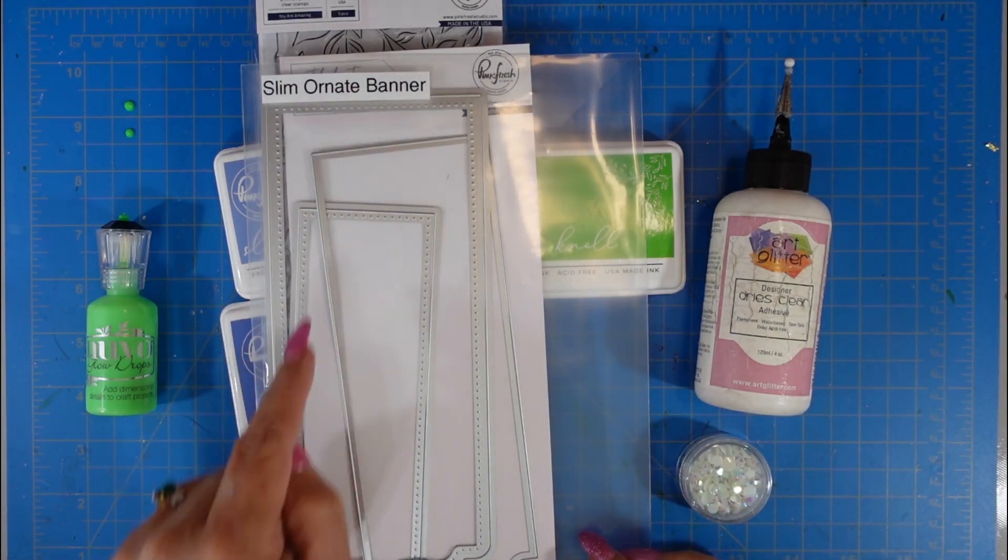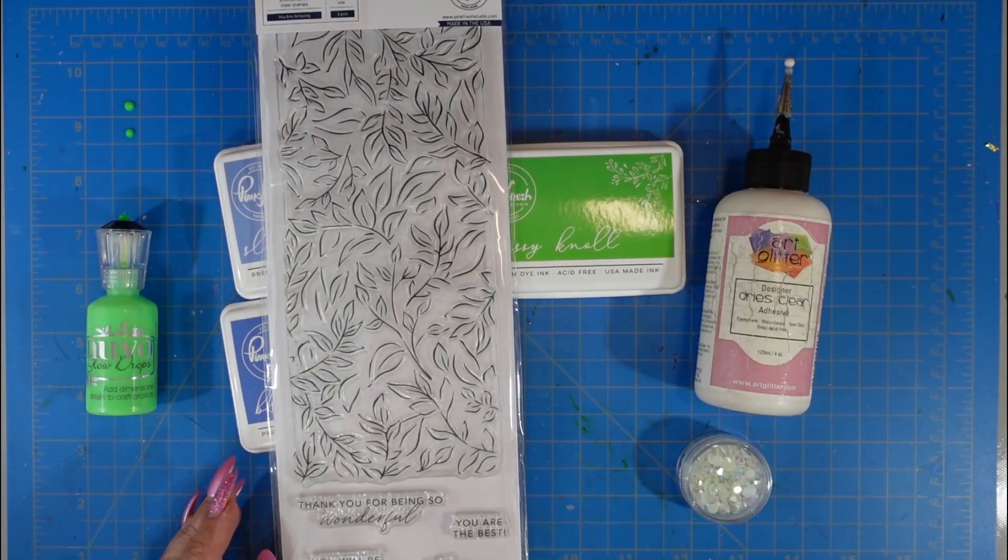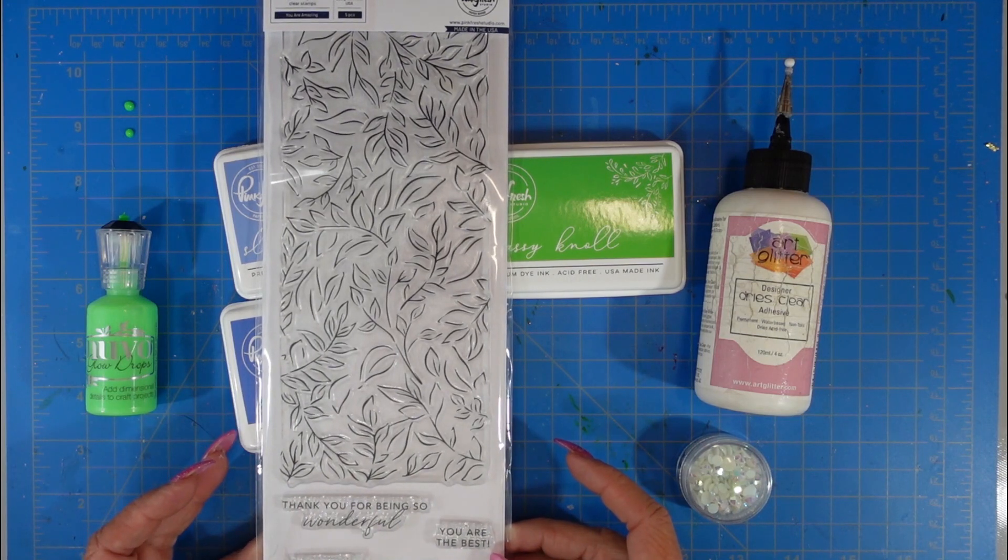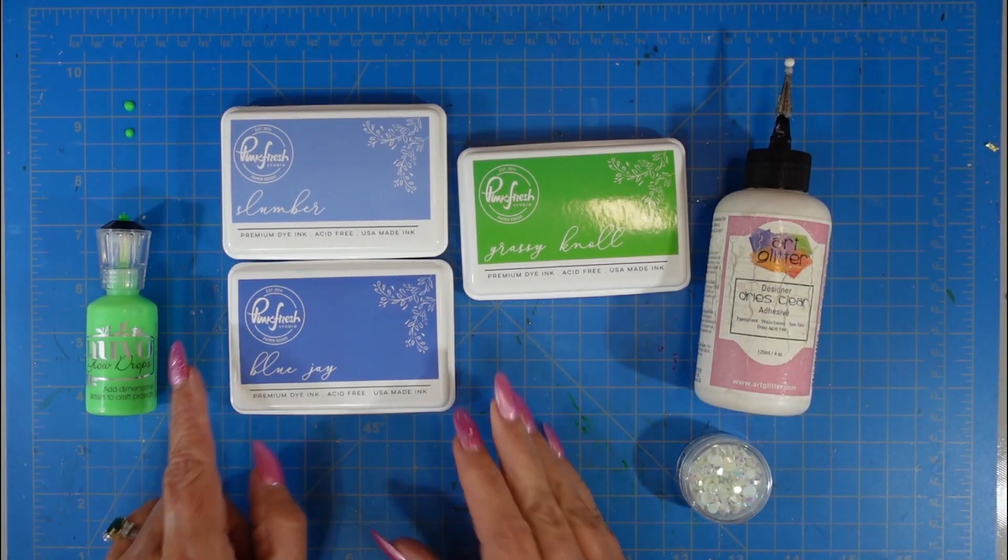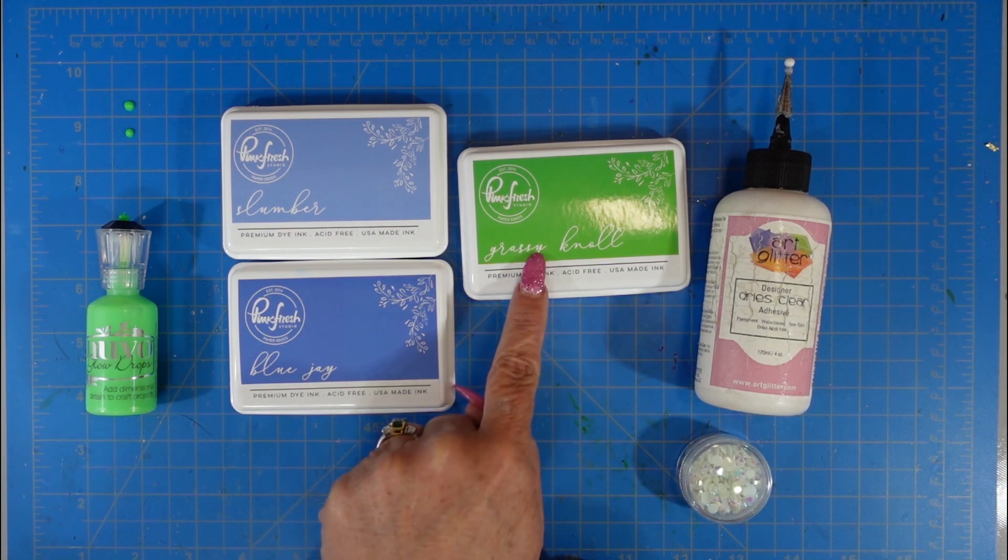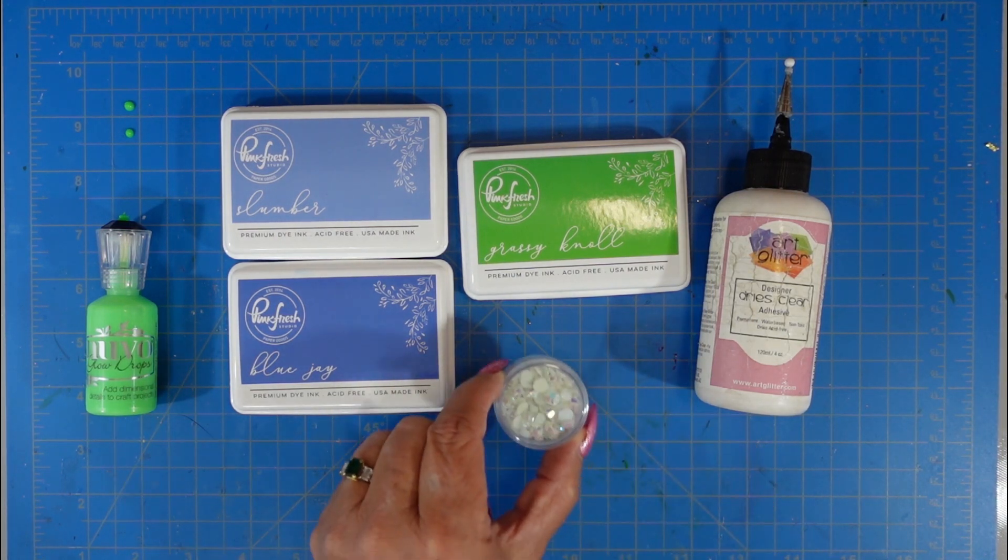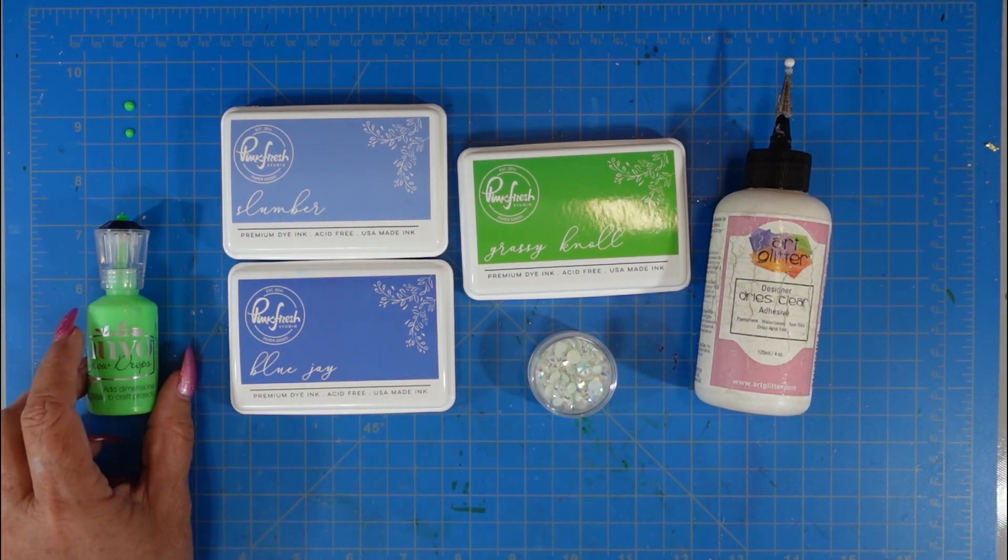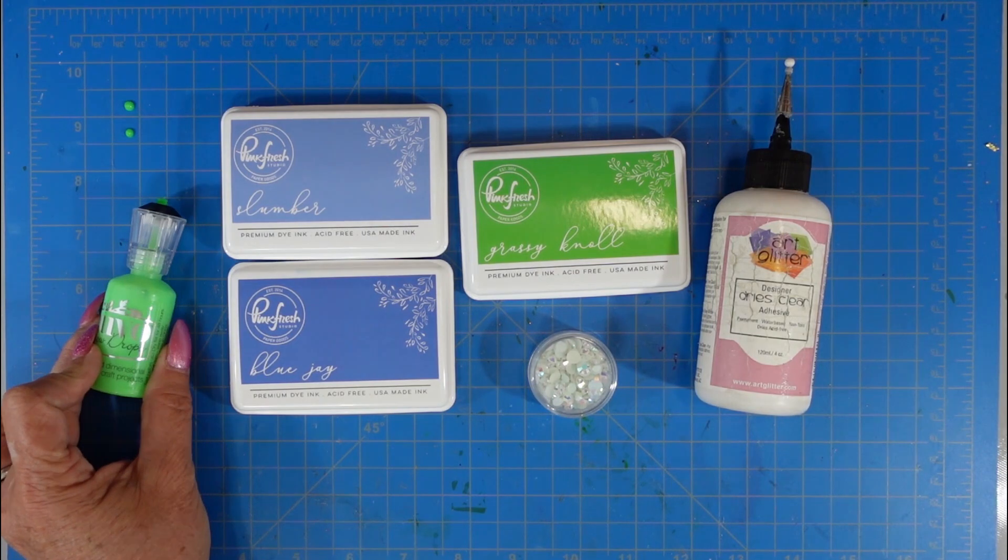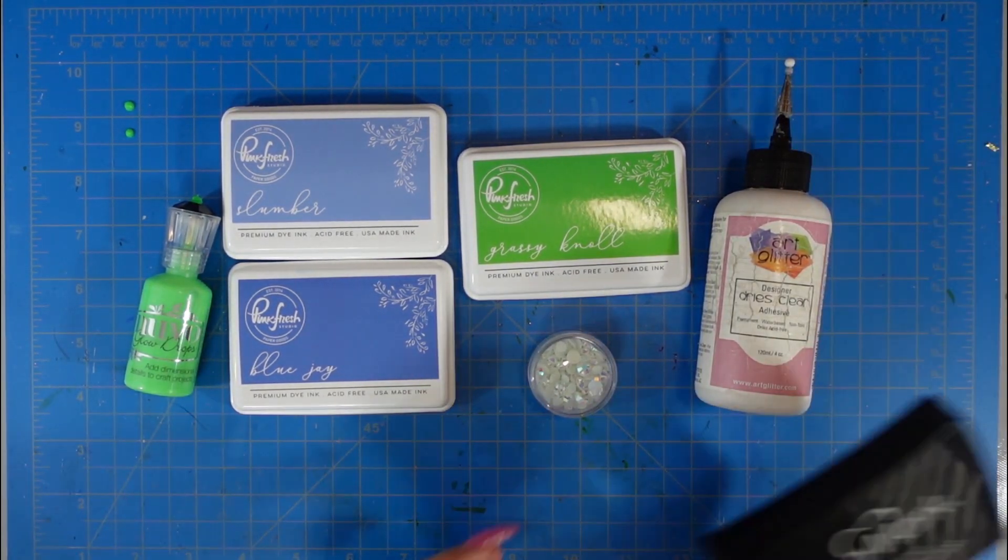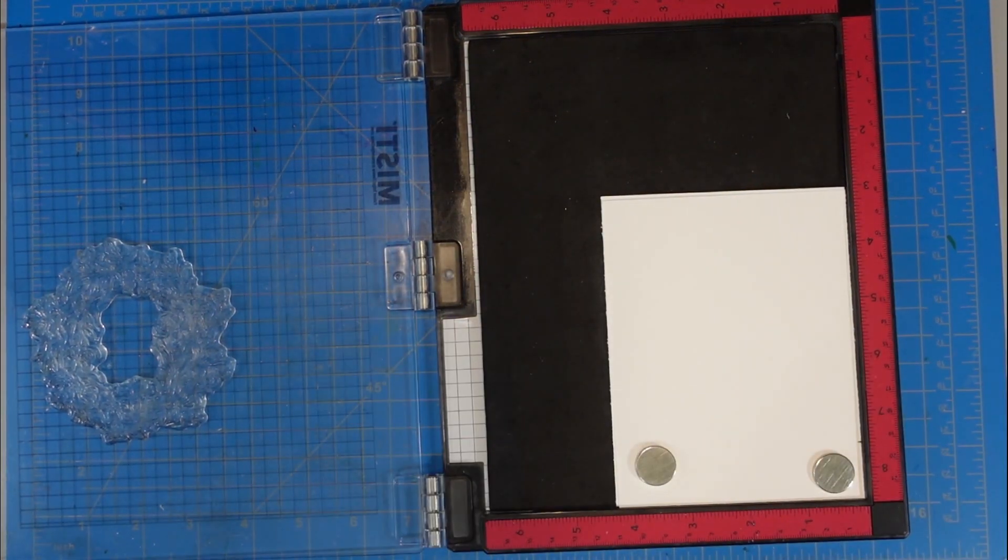I'm also using the Ornate Banner slimline die from Pinkfresh Studio. You Are Amazing is a stamp and stencil set - I'm using that large leaf stamp but not the stencil today. The inks I'm using are Grassy Knoll, Slumber, and Blue Jay. I'm using those jewels from Pinkfresh Studio, some Art Glitter Glue, and these Glow in the Dark Nouveau Drops. I used them because they coordinated very well with the Grassy Knoll. And we're going to do some heat embossing, so I need to use some Versamark ink.